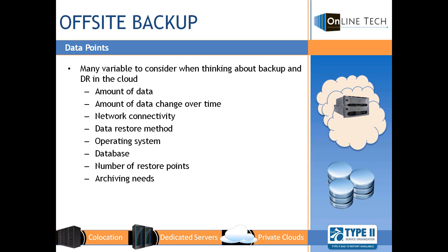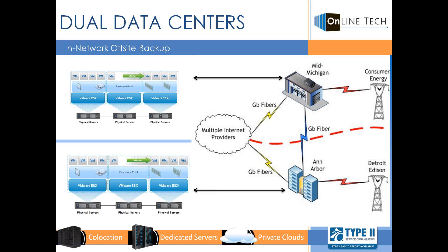When combined with a dual data center model, the off-site backup solution we propose and utilize is unbeatable. In this picture you see the mid-Michigan data center on the top right and our Ann Arbor data center on the bottom right. Your data resides in either location and is backed up to the other one, all going across our network cloud. The data centers are connected by private high-speed gigabit fiber and sit across multiple power grids, which really boosts your availability and resiliency.